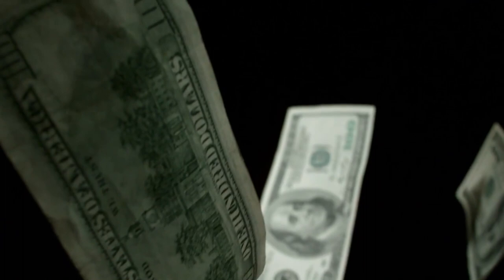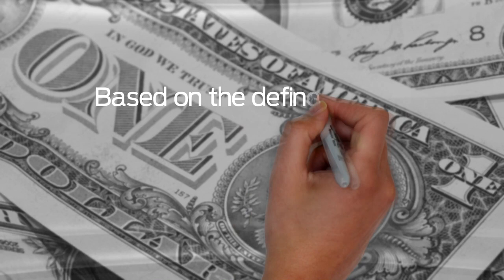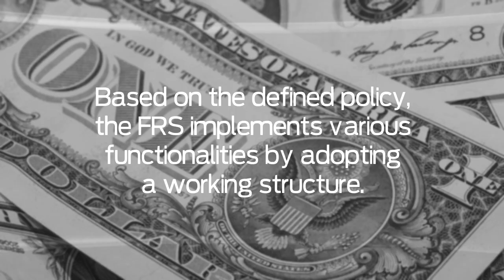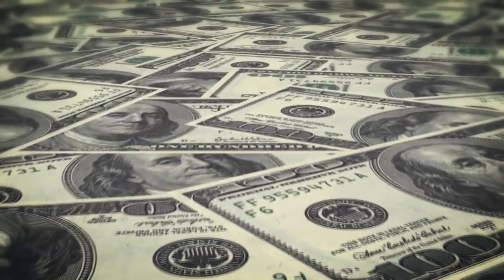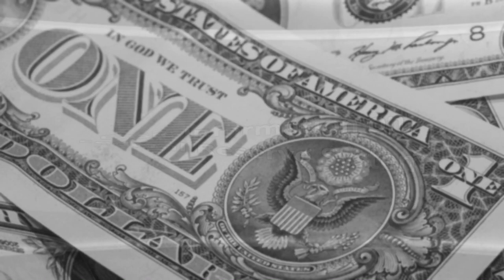The monetary policy is defined by the Federal Open Market Committee, wherein the committee is associated with the FRS. Based on the defined policy, the FRS implements various functionalities by adopting a working structure. Since the Central Bank of the U.S. regulates and governs the world's leading economy, the Central Bank is considered as the most powerful institution.